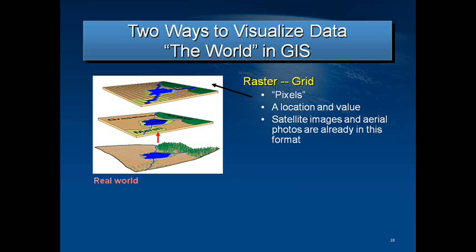Common examples are satellite images and aerial photos. These are types of raster layers where each cell displays what light wavelength is emitted or reflected from that location — or maybe just the average color or grayscale coming from that location. Other examples of raster layers would be temperature and elevation.